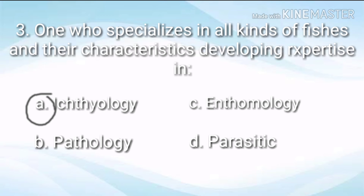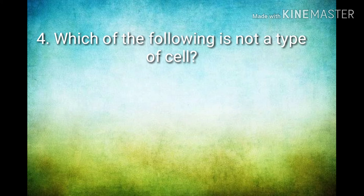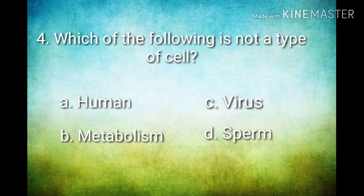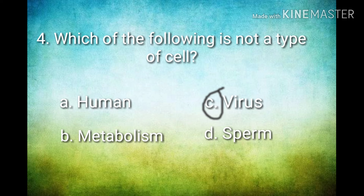For number 4: Which of the following is not a type of cell? A human, B metabolism, C virus, or D sperm? Hit pause and think. The correct answer is C, virus — because the virus is not a type of cell.